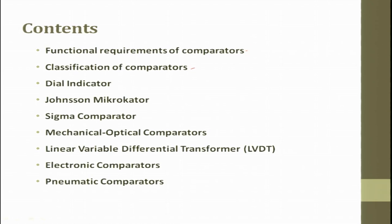We will look into mechanical, then mechanical optical, then pneumatic, then electronic, and then complete this chapter. We will see dial gauge and dial indicators, which are exhaustively used in workshop as well as in tool room, then Johnson's micro comparator, then sigma comparator, mechanical optical comparators, LVDT, electronic comparators and pneumatic comparators. At the end of this lecture you will be able to understand and appreciate how these instruments work.